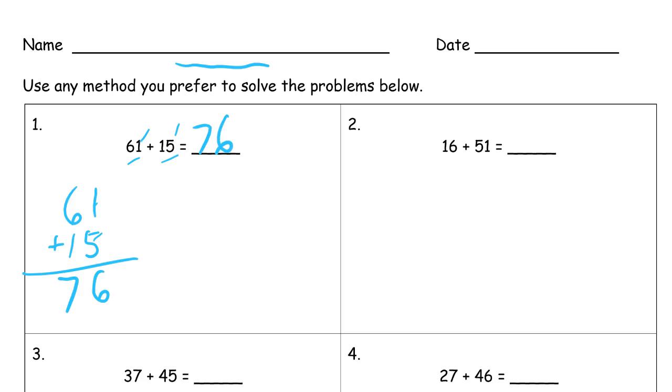And here we have 16 plus 51. It's kind of the same numbers, isn't it? So we have 16 and I'm going to draw the pictures this time with the quick tens. So that's 10, one, two, three, four, five, six, and 51 is one, two, three, four, five, and one. So here we go. We just have seven ones and here we have six tens. Count them.